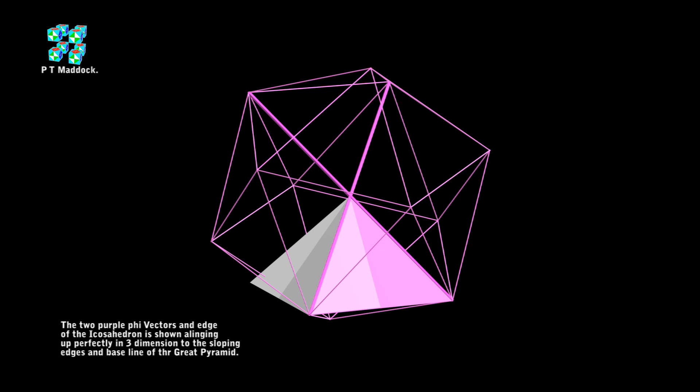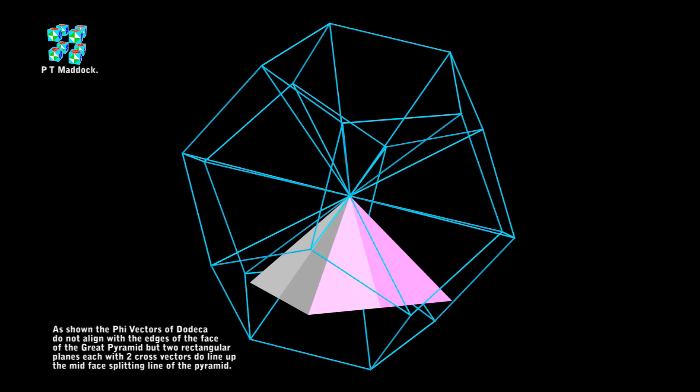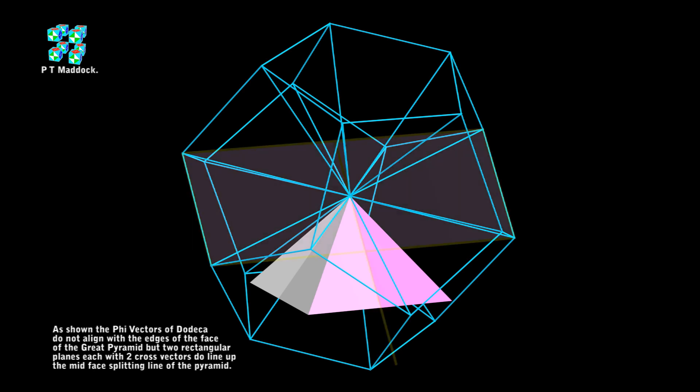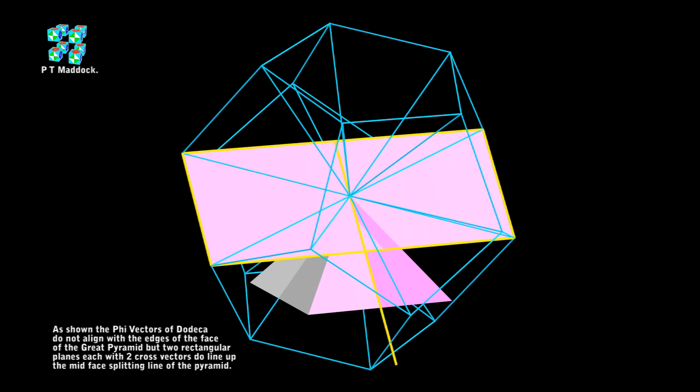Now let's take a look at the Dodeca geometry. You can see that the Dodeca vectors don't actually line up with the edges of the pyramid. But we have a Dodeca rectangle with the diagonal vectors lining up with the face of the pyramid, and you can see that the yellow center line — the geometry runs perfectly, splitting the two faces.